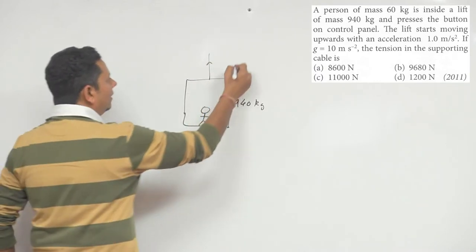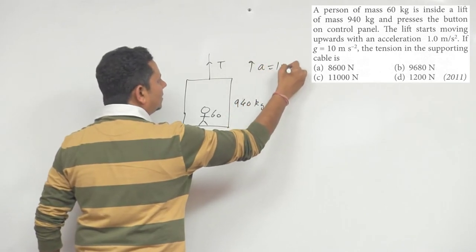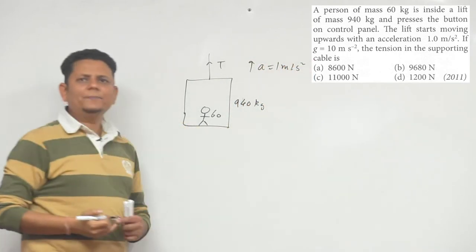the lift accelerates upward with acceleration A equals 1 meter per second square. There will be tension in the whole system.